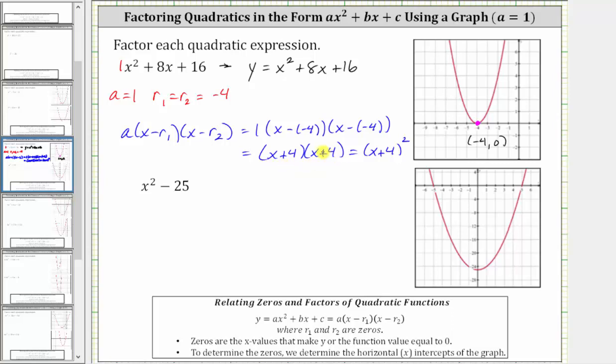Next, we have x squared minus 25. To factor this graphically, we graph the corresponding function, y equals x squared minus 25, which I've already done here on the right.